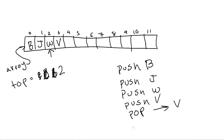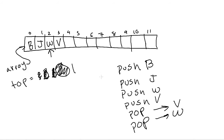Let's pop again. We take the top slot, which is slot two, return the W, and then decrement top from two to one. That's basically all there is to it. It's pretty easy to use an array to implement the stack because a stack is basically just a more restricted form of an array anyway.